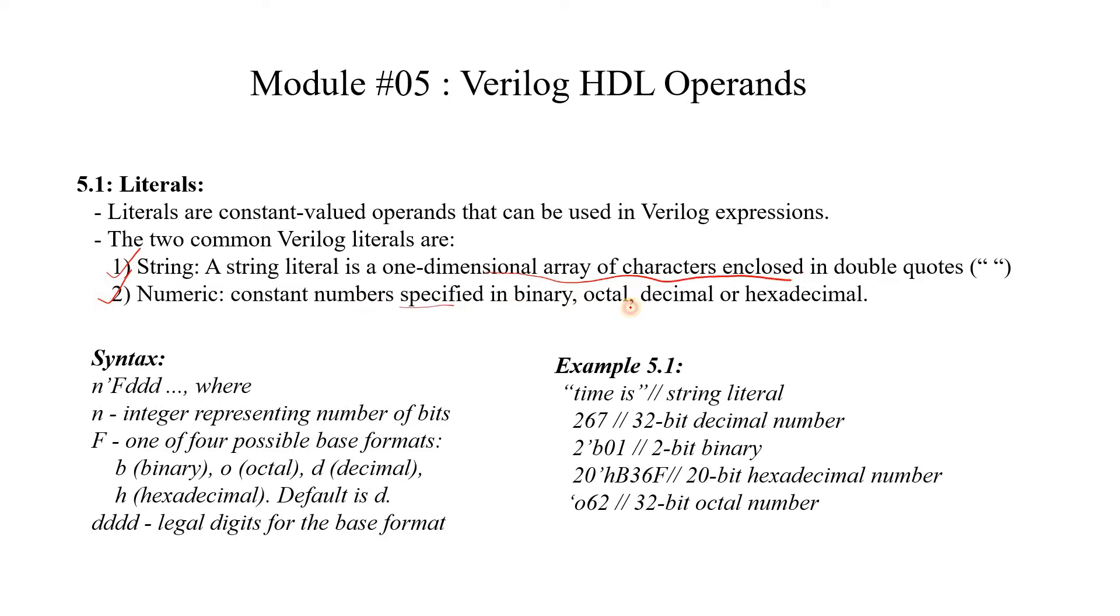A string literal is a one dimensional array of characters enclosed in double quotes. A constant number can be specified in binary, octal, decimal or hexadecimal. So here is an example.